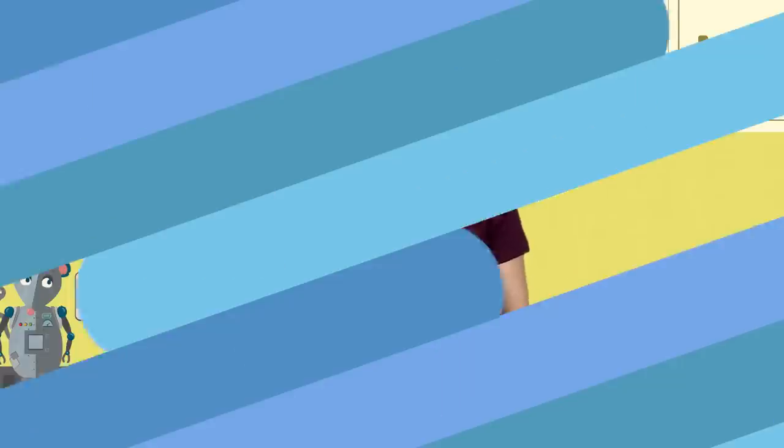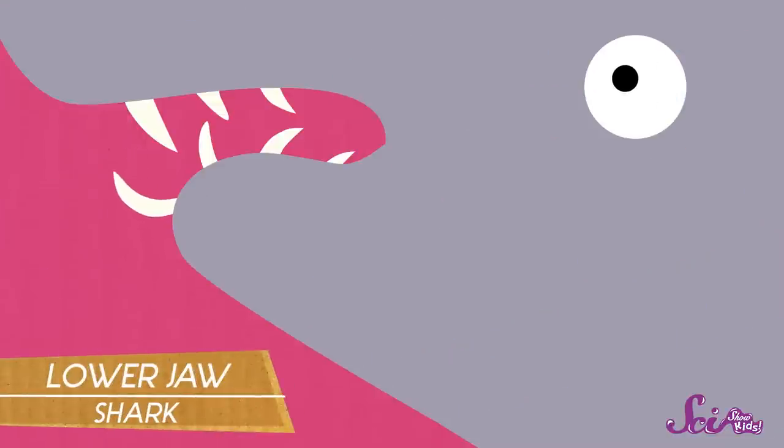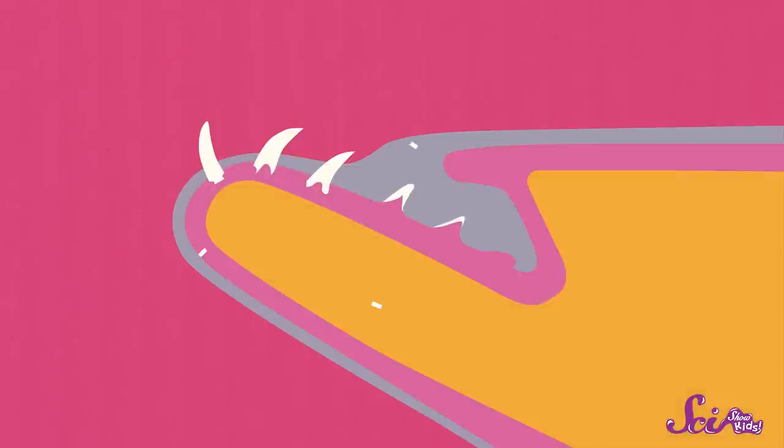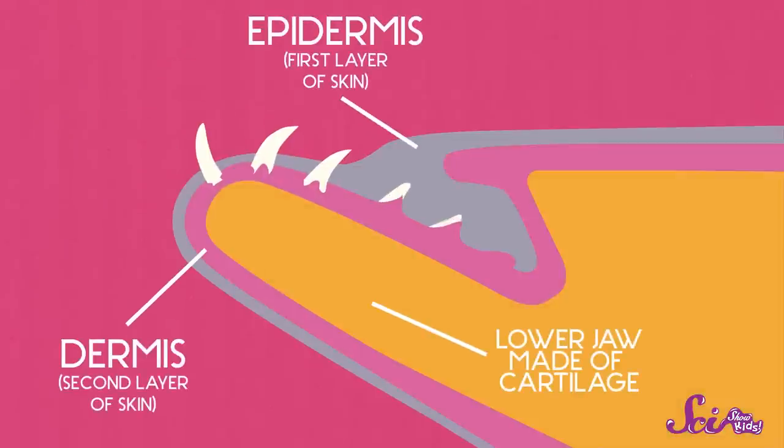Especially considering how they eat. Sharks feed by biting down hard on prey, like seals or other fish, and they shake them from side to side with a lot of force. This can make their teeth come loose or even fall out, so they need to be able to replace them easily. Luckily for them, they have these rows of new teeth right behind the last ones, just waiting to move up. When a shark loses a tooth, it's replaced by another one in just one or two days.